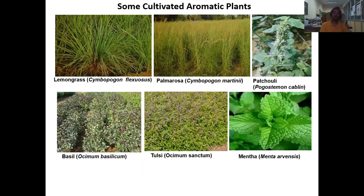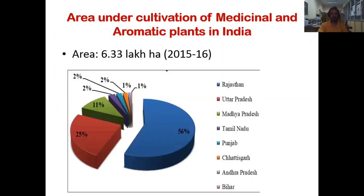Some of the cultivated aromatic plants include: Lemongrass (Cymbopogon flexuosus), Palmarosa (Cymbopogon martinii), Patchouli (Pogostemon cablin), Basil (Ocimum basilicum), Tulsi (Ocimum sanctum) and Mentha (Mentha arvensis). These are some of the aromatic plants cultivated in our country.